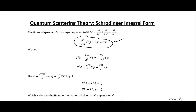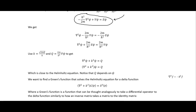We start with our differential form of the Schrödinger equation, do some substitutions, and arrive at a form where Q equals (2m / ℏ) times the potential times the wave function, and K is in its usual form. As is often the case in quantum mechanics, we're making these substitutions to get the equation into a form we can actually work with.